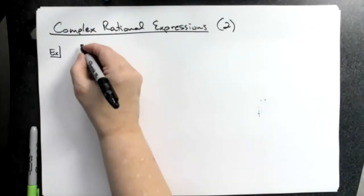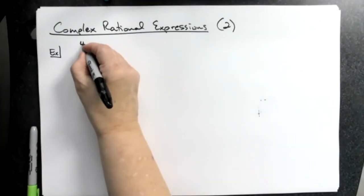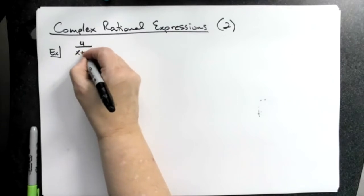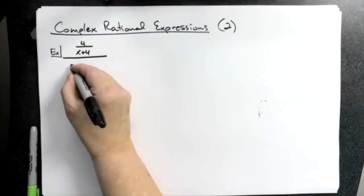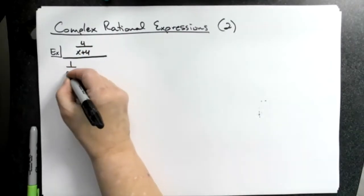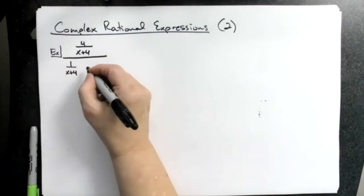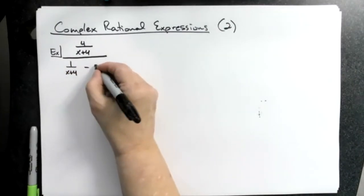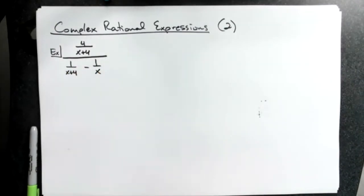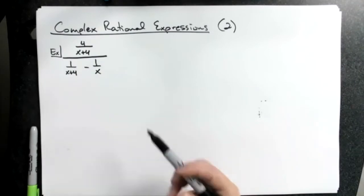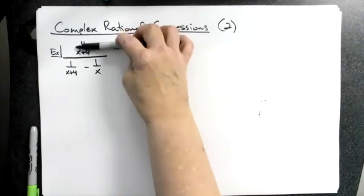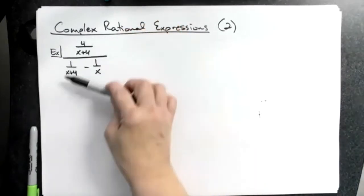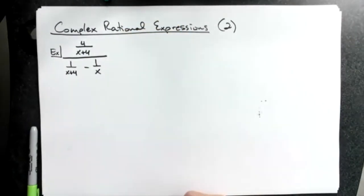You might have something that looks like a 4 over an x plus 4, all over a 1 over an x plus 4 minus a 1 over x. This is a complex rational expression. This is your main fraction bar. You have a fraction in the top and two fractions in the bottom.